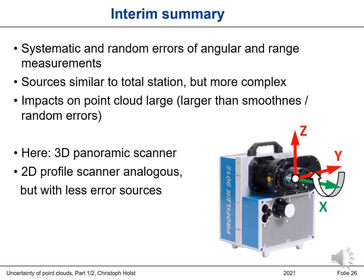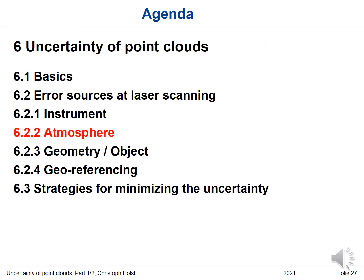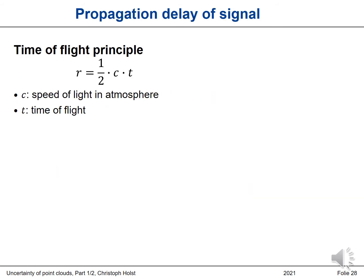I just talked about 3D panoramic laser scanners, but as I said before, you can just leave one axis to come to a 2D profile laser scanner and transform these concepts to profile laser scanners used in mobile mapping. Now we've talked about the instrument and how it contributes uncertainty to the point cloud. Now let's talk about the atmosphere.